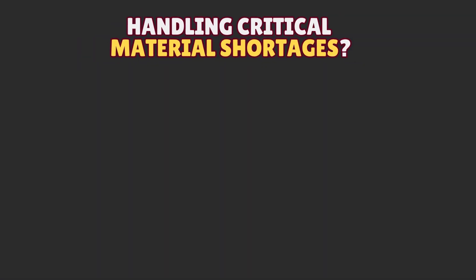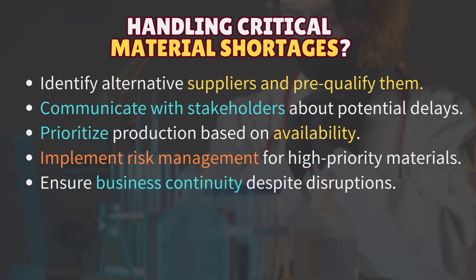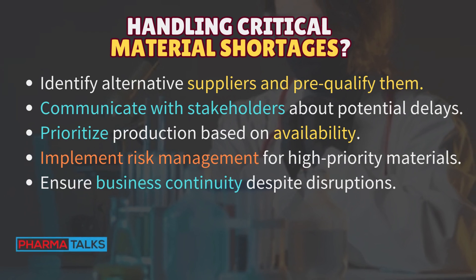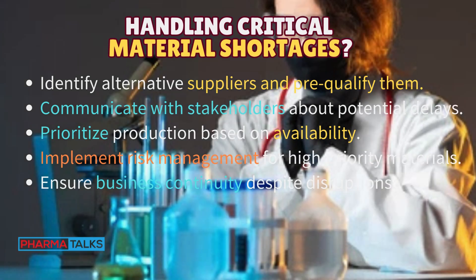Handling critical material shortages: Identify alternative suppliers and pre-qualify them. Communicate with stakeholders about potential delays. Prioritize production based on availability. Implement risk management for high-priority materials. Ensure business continuity despite disruptions.